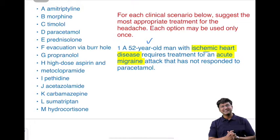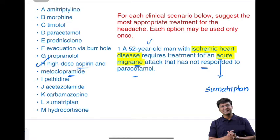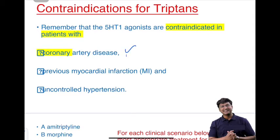The sixth scenario: a 52-year-old man with ischemic heart disease requires treatment for an acute migraine attack not responding to paracetamol. The drug of choice for acute migraine is sumatriptan, but it cannot be given in ischemic heart disease. In these individuals, give high-dose aspirin and metoclopramide. Contraindications to triptans include coronary artery disease, past history of MI, and uncontrolled hypertension.